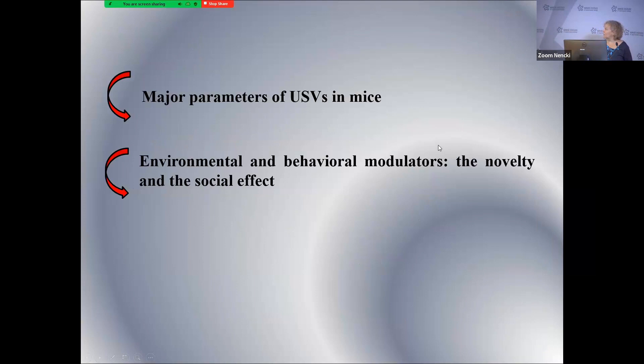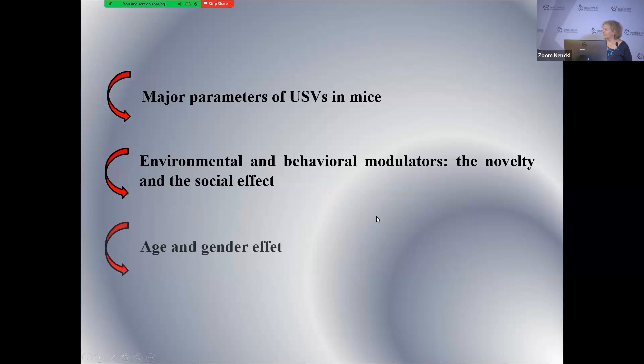First I will talk briefly about the major parameters of USV in mice — and you will see they are very similar to what we have in rats. I will talk about the environmental and behavioral modulators of USV, specifically the effects of novelty that trigger a lot of USV, and the social context. Then I will end up talking about age of recording and the gender effect, which is of early interest for us in my lab.